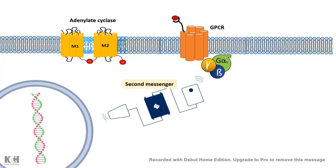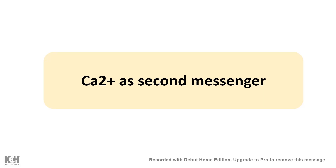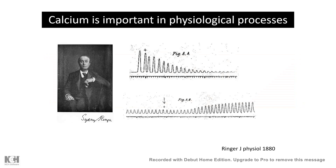First let's talk about calcium as a second messenger. Calcium was discovered by Sydney Ringer in the 1880s, who was trying to generate an artificial buffer composition that could make an isolated heart beat. All his experiments failed until one day he accidentally used tap water instead of distilled water and magically the heart started beating. It was later found that London tap water was heavily contaminated by calcium salts, and from that time this solution was known as Ringer's solution.